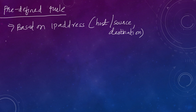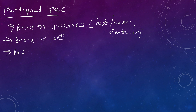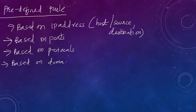Rules can also be based on ports - if traffic is incoming from a certain port, never allow it into the internal network. Rules can also be based on protocols, domain names, or application programs.